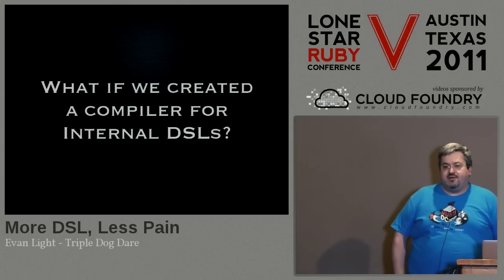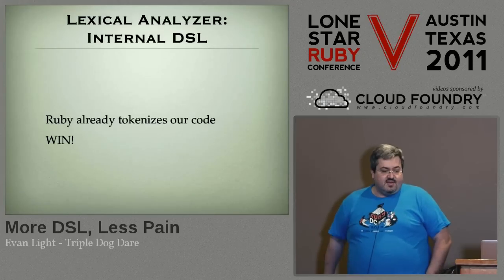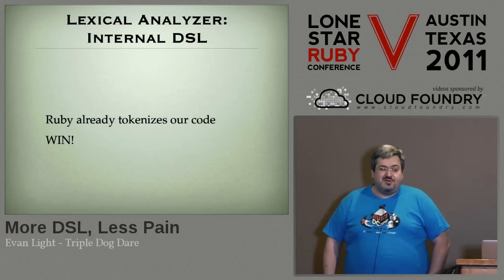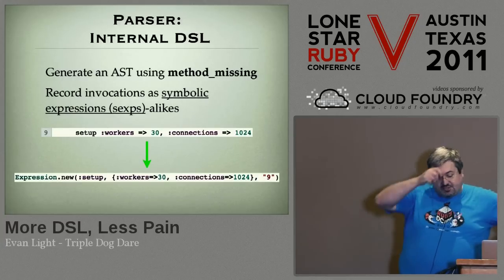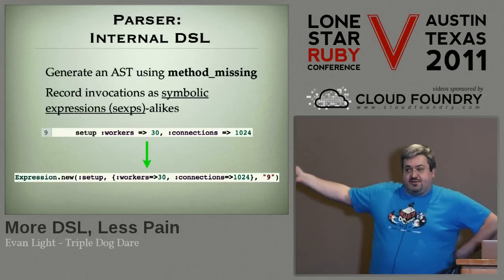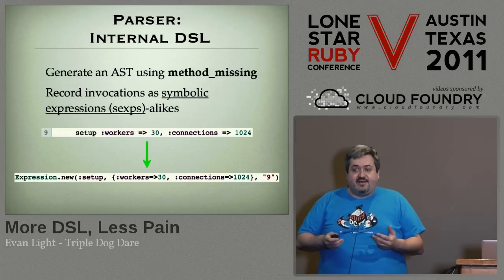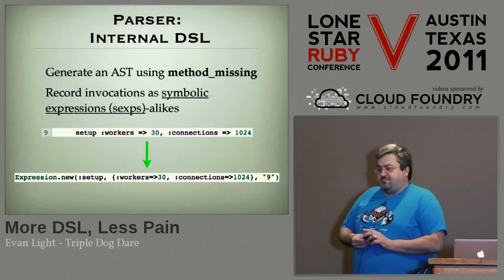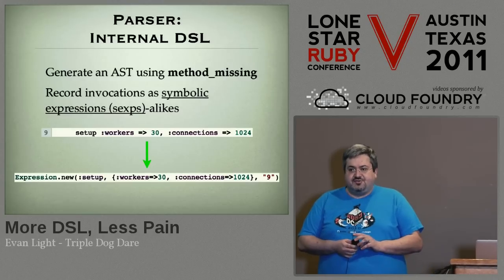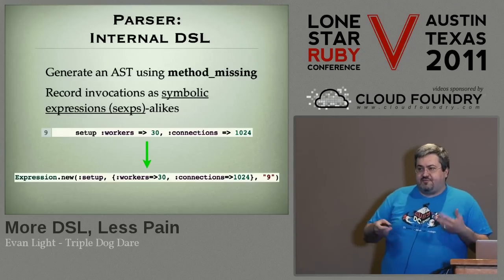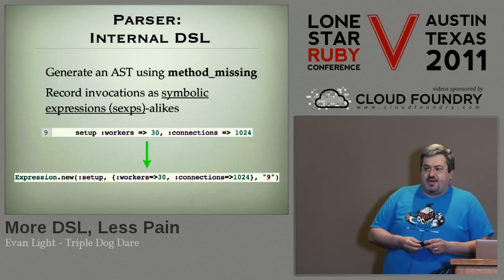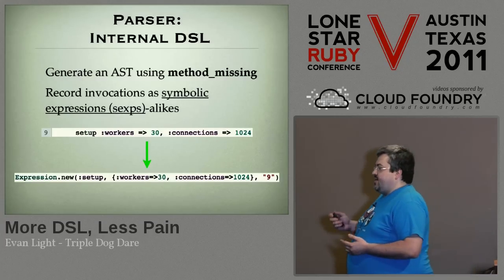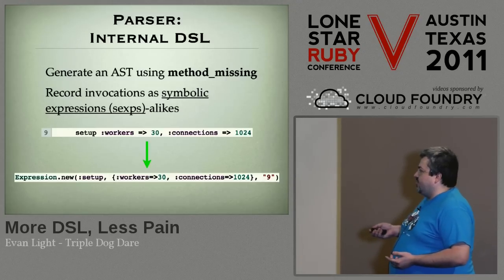For a lexical analyzer, Ruby already lexically analyzes itself — it is an interpreter — so we don't have to do too much there. In terms of the parser, I used method_missing to collect data and build up the AST. ASTs normally store data in things called symbolic expressions — usually a list of the action or method being performed, the expression, and the values involved. What I chose to do when modifying Lispy was to take a slightly more OO approach using a struct. So they're not really S-expressions — I call them S-expression-alikes.